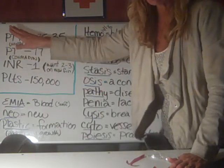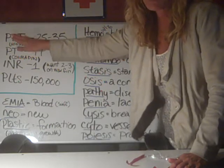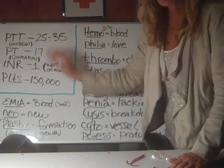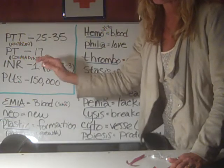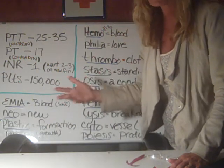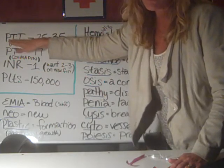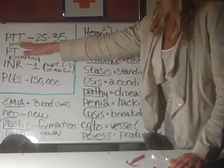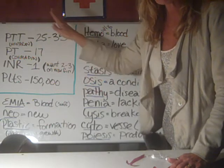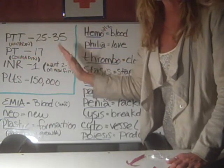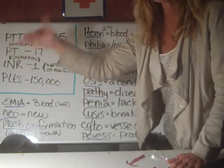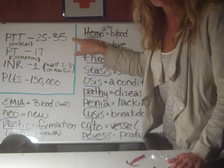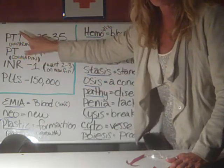PTT is the partial thromboplastin time. You get a PTT level if your patient is on heparin. Heparin is used short term — only in the hospital or in a controlled setting. Patients don't go home on heparin because the bleeding risks are too high. PTT is drawn a lot in hospitals, not in the outpatient setting. Normal PTT range should be between 25 and 35. Sometimes if you want them anticoagulated, you might want this number to go up a little bit — that's called a therapeutic range.